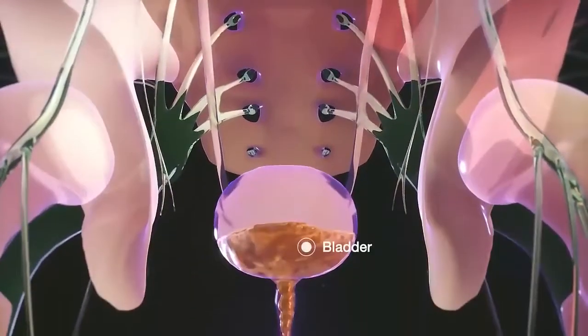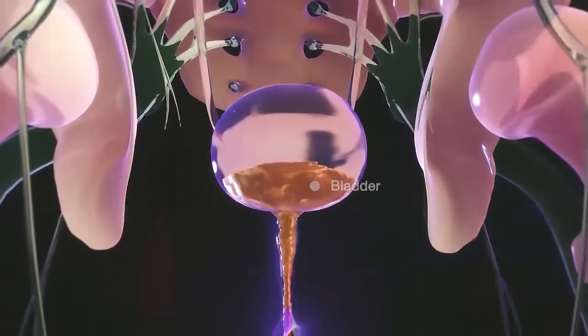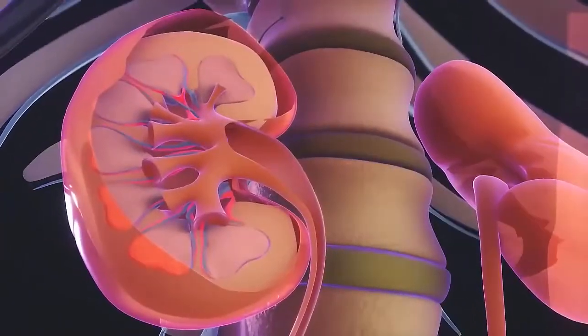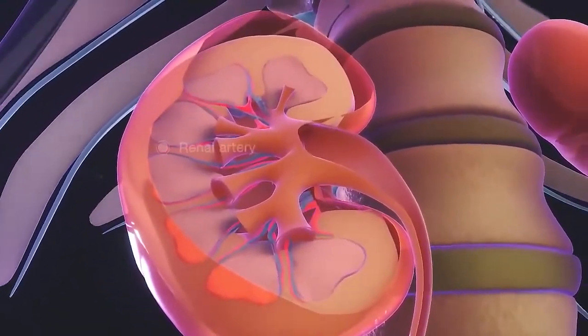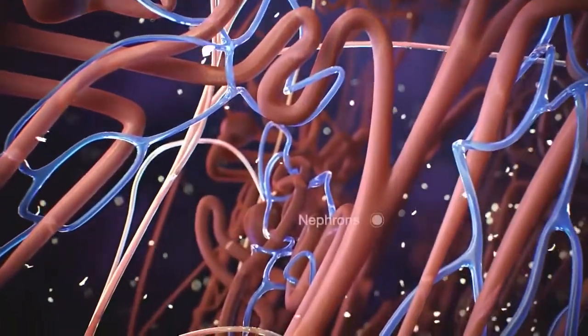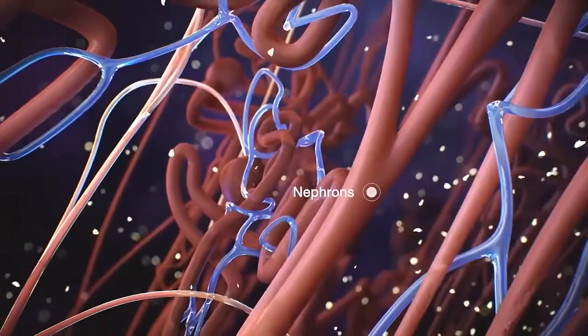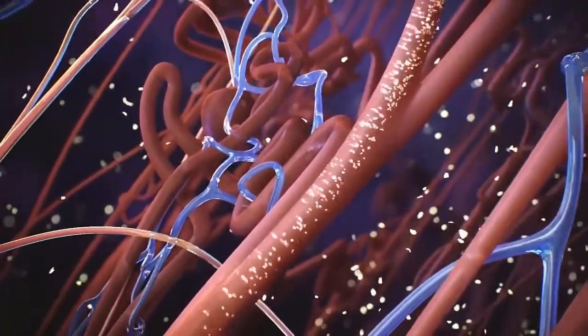Waste products are expelled in the urine. Each kidney receives blood through a branch of the aorta called the renal artery. This blood is then filtered through nephrons to produce urine. There are about 1 million nephrons in each kidney.